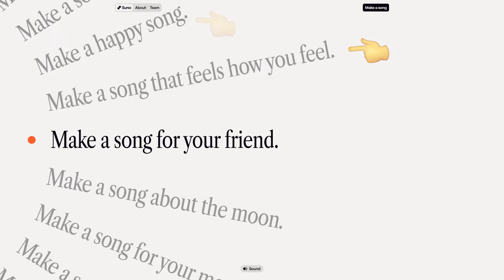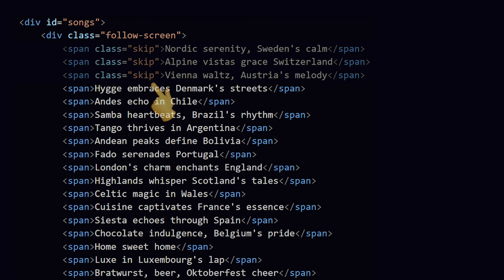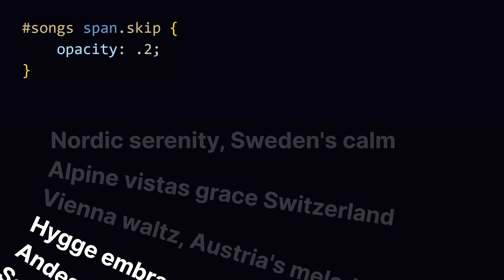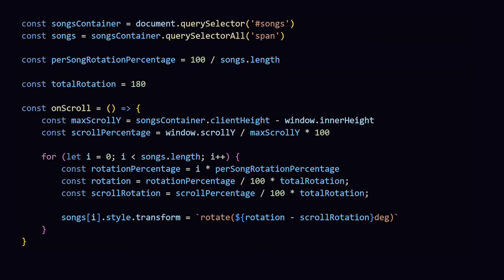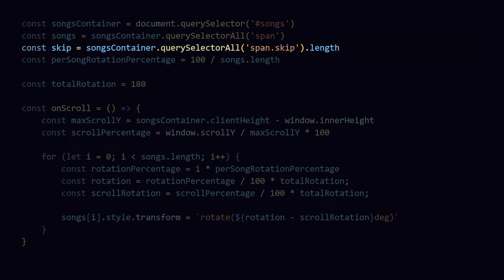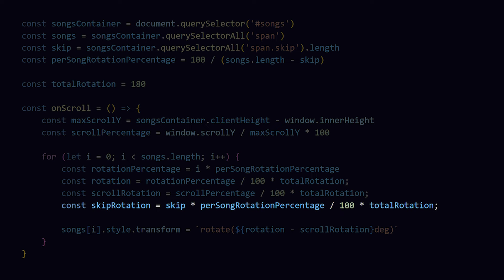The original website has some placeholder songs above the first one that you cannot scroll to. Let's recreate that by adding a few extra songs with the skip class, making them mostly transparent so it's clear they are disabled. We have to take those elements into account for our calculations: first get the amount of songs to skip. Because there are more songs the rotation per song will be less, so let's subtract the songs that should be skipped. We do want the skippable songs to rotate along though, so we still start at the very first skippable song in our for loop. But now we don't start at 0 degrees — instead we'll start at a negative angle by subtracting the rotation of the skippable songs.